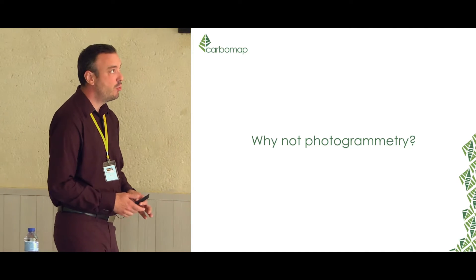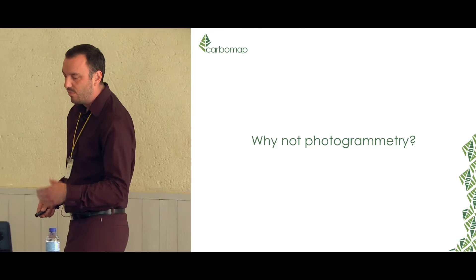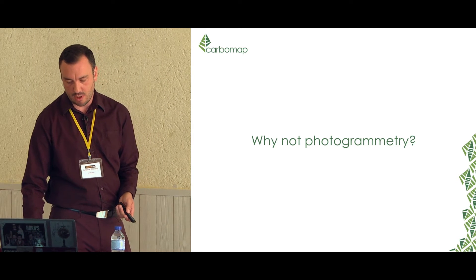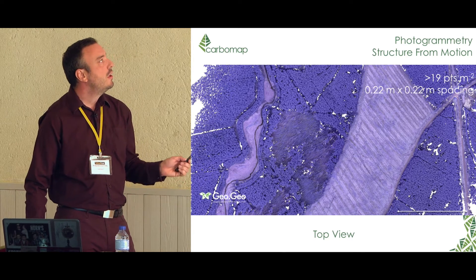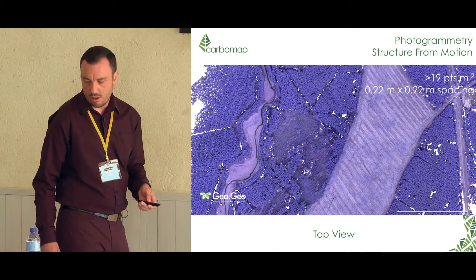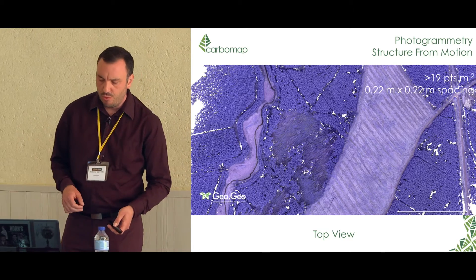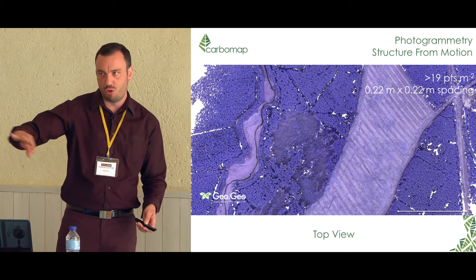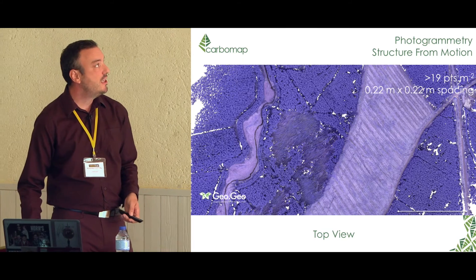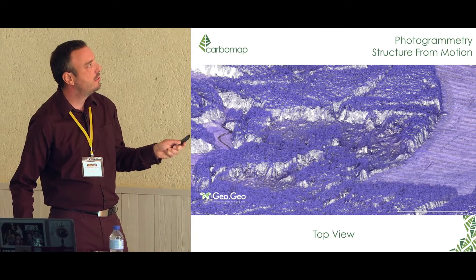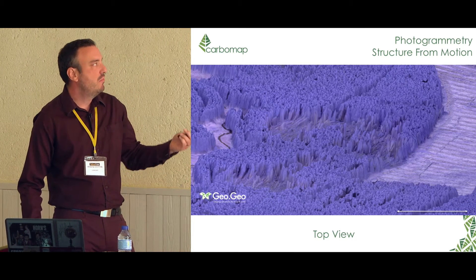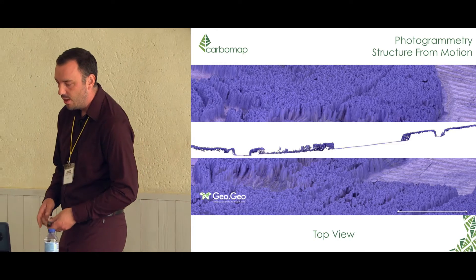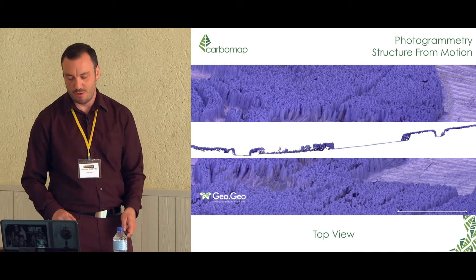Why not photogrammetry for forestry? We've been asked many times why one shouldn't use photogrammetry for forest inventory or forest mapping. This dataset comes from GeoGeo, a Glasgow-based company — it was flown with an eBee wing with infrared. Some people claim that using infrared solves the problem of tree mapping. From the top view everything looks nice and neat, but when you look from the side you can see it's not as good as it should be when meshed. The biggest problem is that you have no ground information under the canopy — this is a fundamental issue when using photogrammetry.